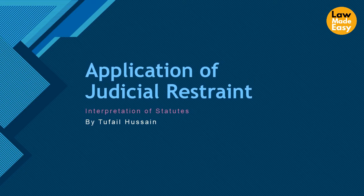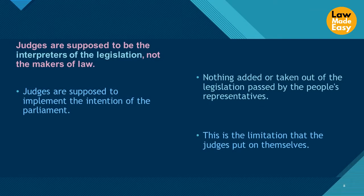What is judicial restraint? Taking its literal meaning: to stop, restrain, or limit something. The judges are supposed to be the interpreters of the legislation, not the makers of law. Although many argue that they make law as well, they are not supposed to make law — they are only interpreters of the legislation. They are supposed to implement the intention of parliament and must not add or take anything away from the legislation passed by the people's representatives. This is the limitation that judges put on themselves to keep their role limited to interpreters of the law.